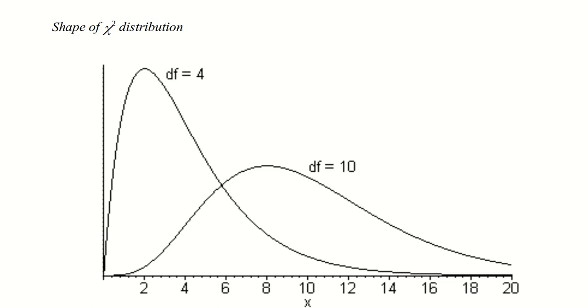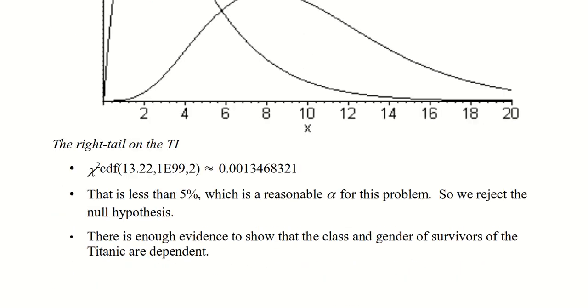So just like for our t tests, chi-squared is a family of distributions. When the degrees of freedom is relatively small, we can see it shoved up against the y-axis. As the degrees of freedom get larger, we can see it pulled out and kind of squashed and flattened a little bit as well. Using our calculators, when we go to the right from 13.22 with a degree of freedom of 2, we get a p-value of 0.0013. That's less than 5%, which would seem reasonable, so we reject the null hypothesis. That means that there is enough evidence to show that class and gender of the survivors of the Titanic are dependent.